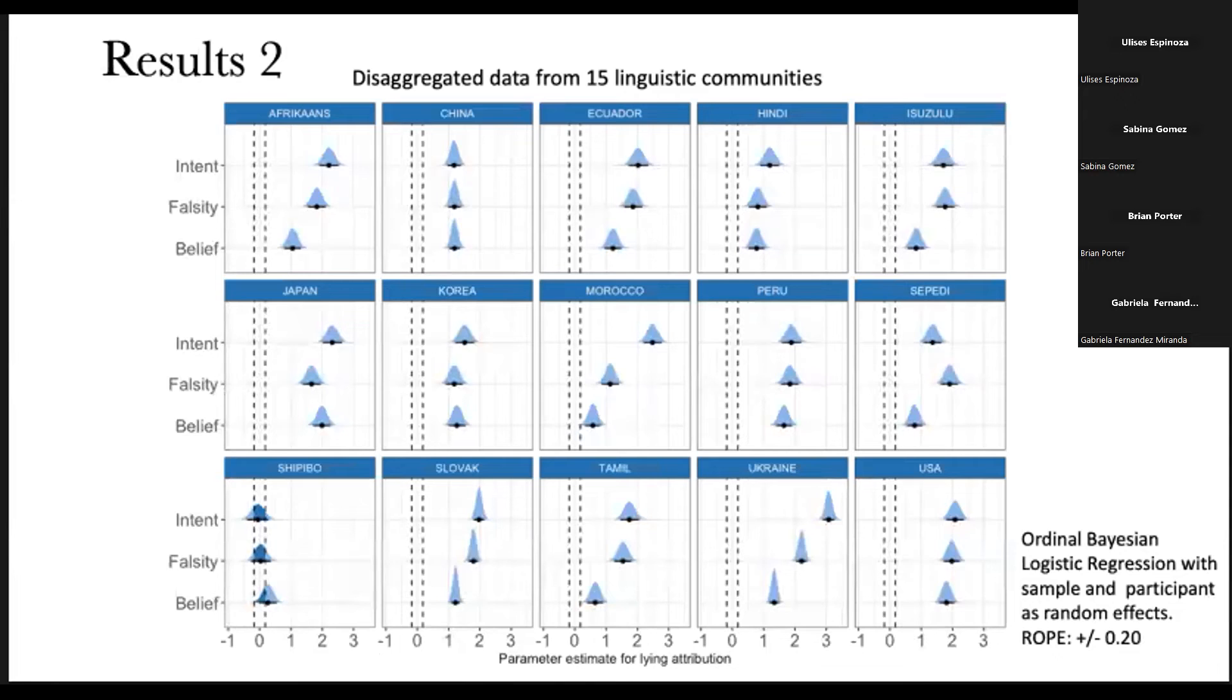But let's look at the disaggregated data, that I think is more interesting. In this case, as you can see, except for Shipibo, that we can have a discussion about what happened with the Shipibo case. Let's put that aside because probably there are some questions about methodology that were different there. But basically, you can see that for every linguistic community, the components are relevant. So all of them are out of the region of practical interest, the ROPE that I mentioned there.